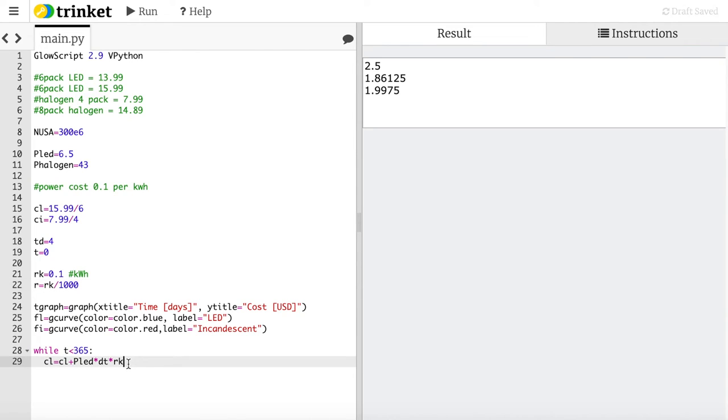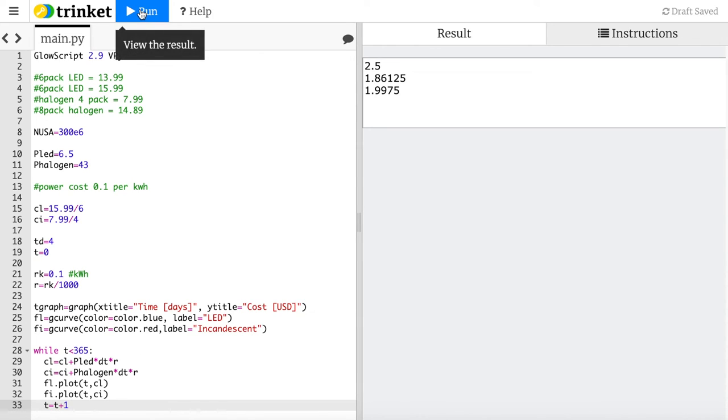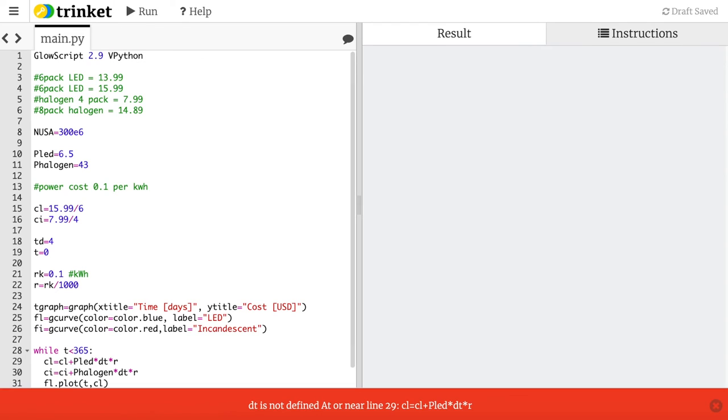I can do the same thing for the incandescent, and now I can plot them. T on the x-axis, CL, FI dot plot t CI. I need to update time plus one - I'm moving one day forward. I think that's it. Let's run it.